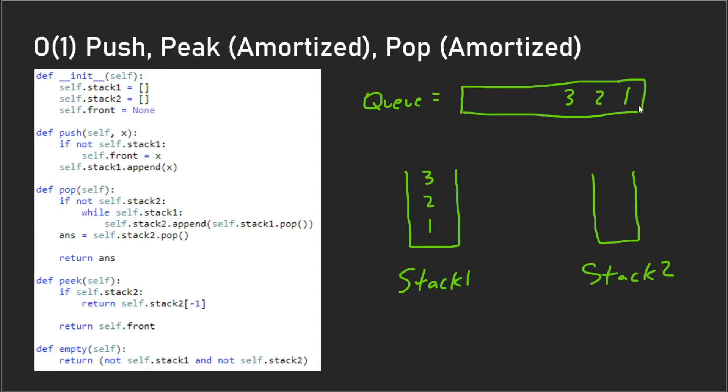So say when we want to do peek, we need to keep track of that element. Let's say that in the case that stack two is completely empty and we try to do a peek operation on it, we would see that there's nothing actually in stack two, so we would return this self.front.